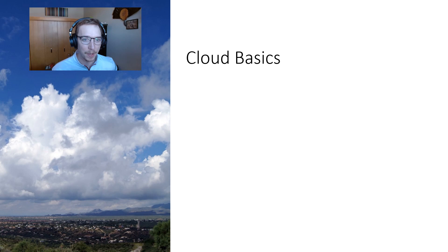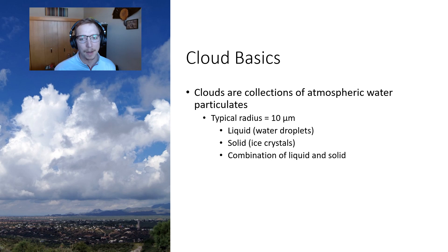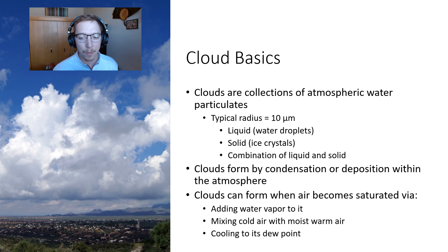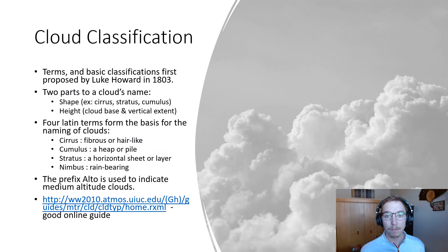Cloud basics — we've touched on this before. Clouds are collections of atmospheric water particulates, with a typical radius around 10 micrometers. They're a combination of liquid and solid: water droplets and ice crystals. They form by condensation or deposition within the atmosphere, and they can form when air becomes saturated by either adding water vapor, mixing cold and warm air masses, or cooling it to its dew point.